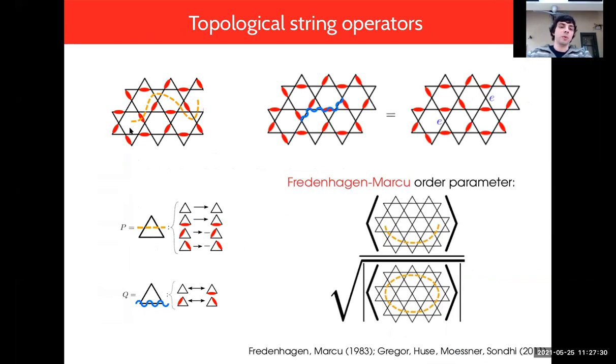For those familiar with the toric code model, it's similar to how we have the diagonal and off-diagonal string operators in that model. This is useful because you could measure it in experiment to diagnose that you have a Z2 topological ordered phase of matter. There's basically two types of string operators: a diagonal one and an off-diagonal one.